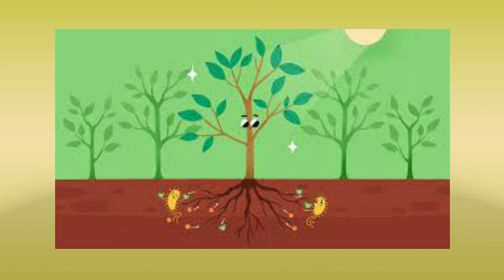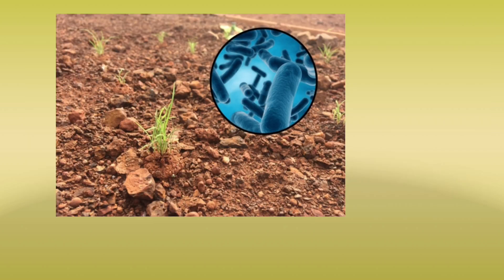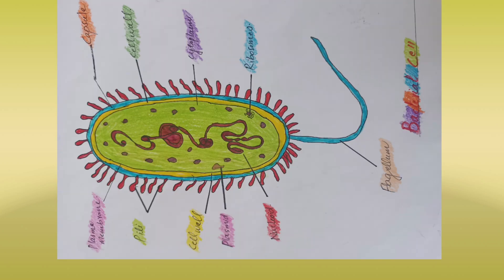However, some of these decomposers are found in the ground and produce necessary nutrients for crops to grow. Bacteria found in soil can fix nitrogen for crops — these bacteria are called nitrogen-fixing bacteria, and the process is called nitrogen fixation. That was all about bacteria — interesting, right?